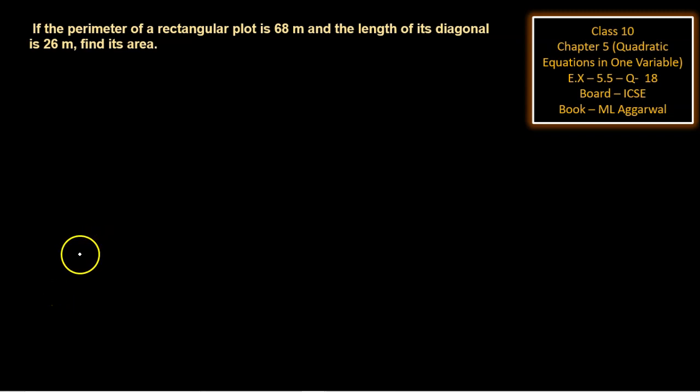Hello everyone, welcome back to my channel. Today's question is: if the perimeter of a rectangular plot is 68 meters and the length of its diagonal is 26 meters, find its area.